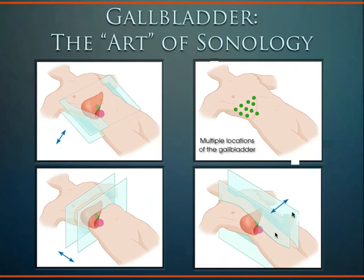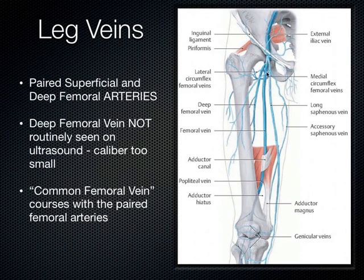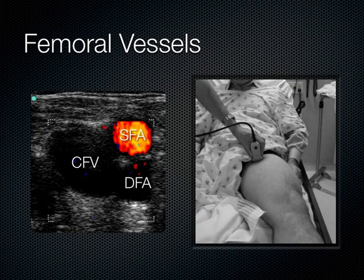For lower extremity vein scanning: the common femoral vein comes from the iliac, travels down the leg, passes through the adductor canal, and becomes the popliteal vein. We compress in the transverse plane to look for DVT. At the very proximal location you see the superficial and deep femoral arteries and the common femoral vein — the vein is medial to the arterial structures. A useful mnemonic: 'Venus is closer to the penis' — the vein is medial.